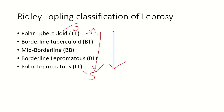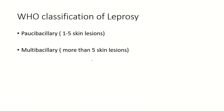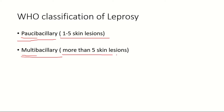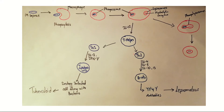The WHO has also classified leprosy as paucibacillary and multibacillary. 'Pauci' means small, so there are a small number of bacteria in paucibacillary, and hence the number of lesions is also less — one to five skin lesions. Whereas in multibacillary, the number of bacteria is huge, so there are more than five skin lesions.